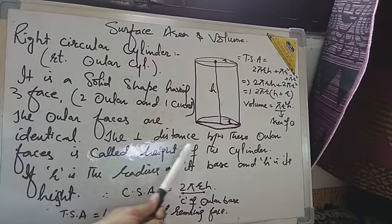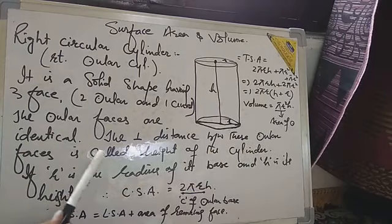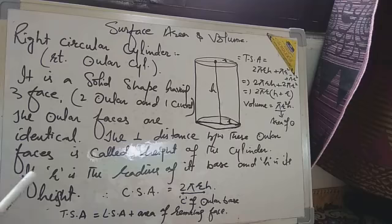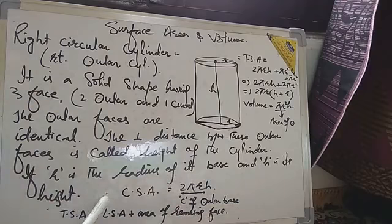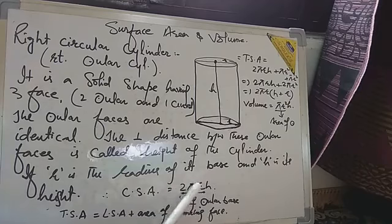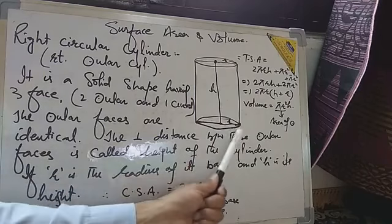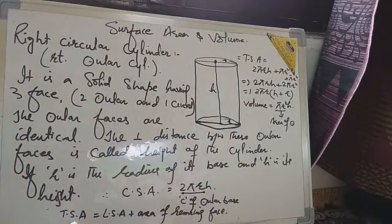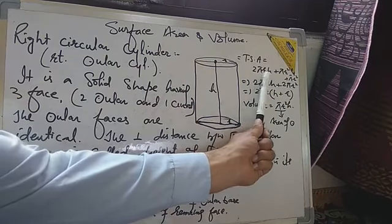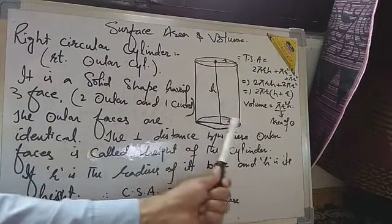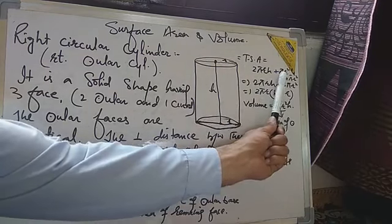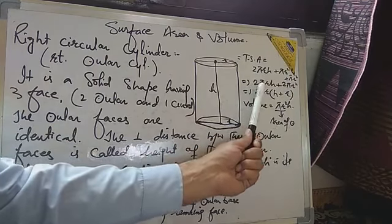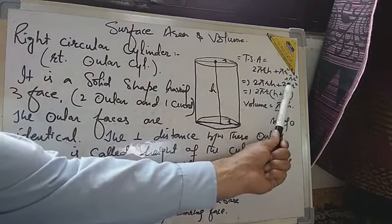The perpendicular distance between the circular faces is called the height of the cylinder. If R is the radius of its base and H is its height, then curved surface area equals 2πRH, where 2πR means circumference of the circular base multiplied by its height. Total surface area means lateral surface area plus area of the remaining faces: 2πRH plus πR² plus πR² becomes 2πRH plus 2πR².